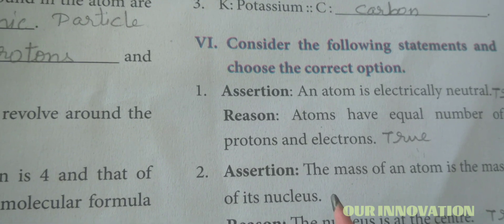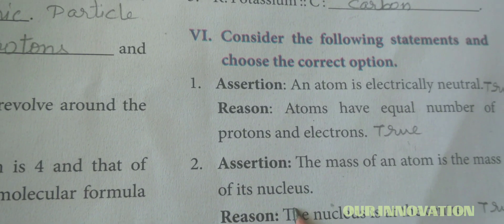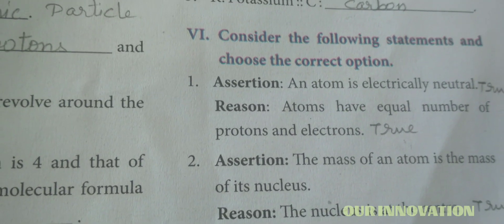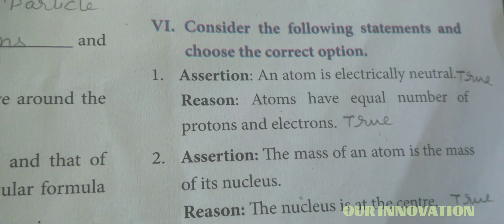Second assertion: The mass of an atom is the mass of its nucleus, that is true. And the reason, the nucleus is at the center, that is also true.